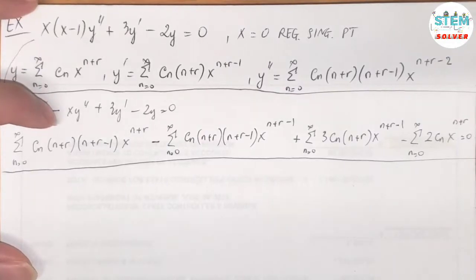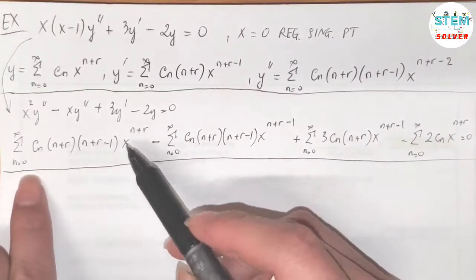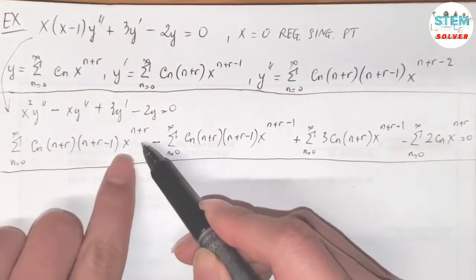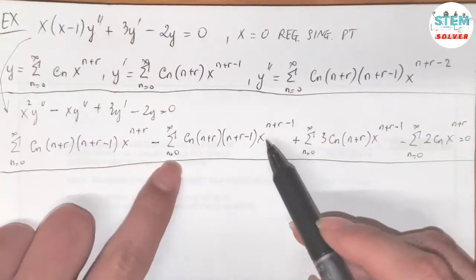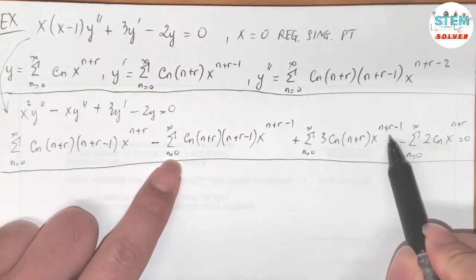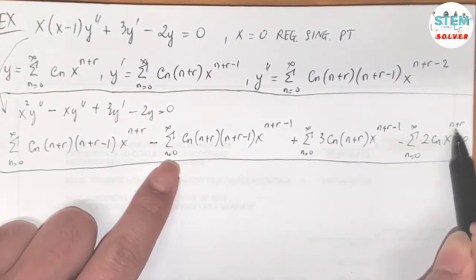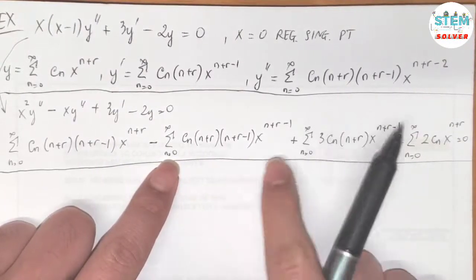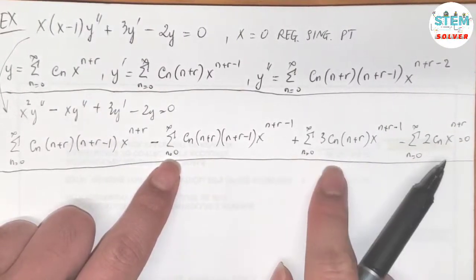Now we look at the power when n equals 0. For the first series, I have x to the r; for the second series, x to the r minus 1; for the third series, x to the r minus 1; and for the fourth series, x to the r. So we need to run out terms for each power series.